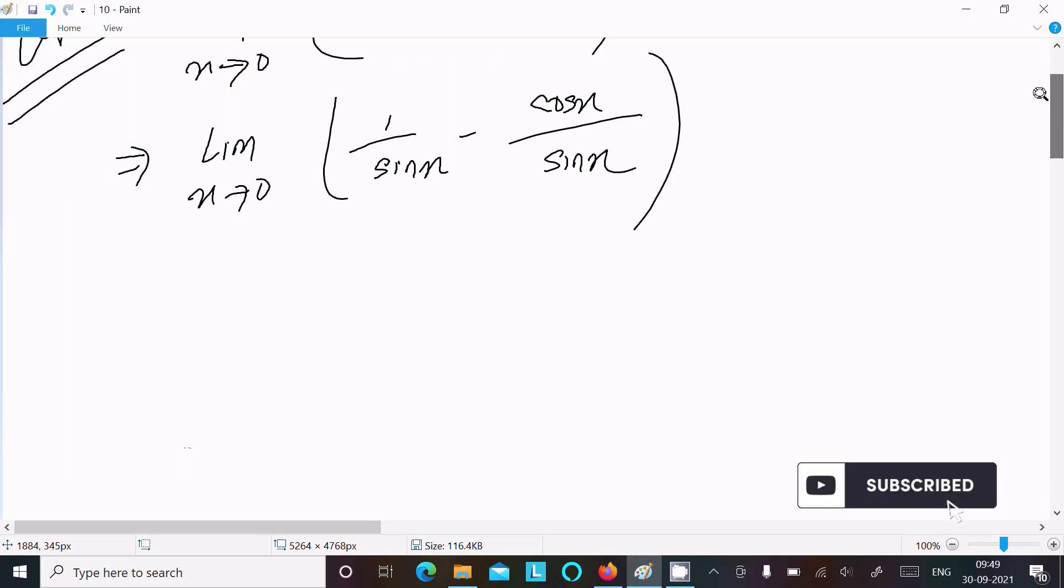After that, take the LCM. Then you can get lim x→0 of (1 minus cos x) divided by sin x.